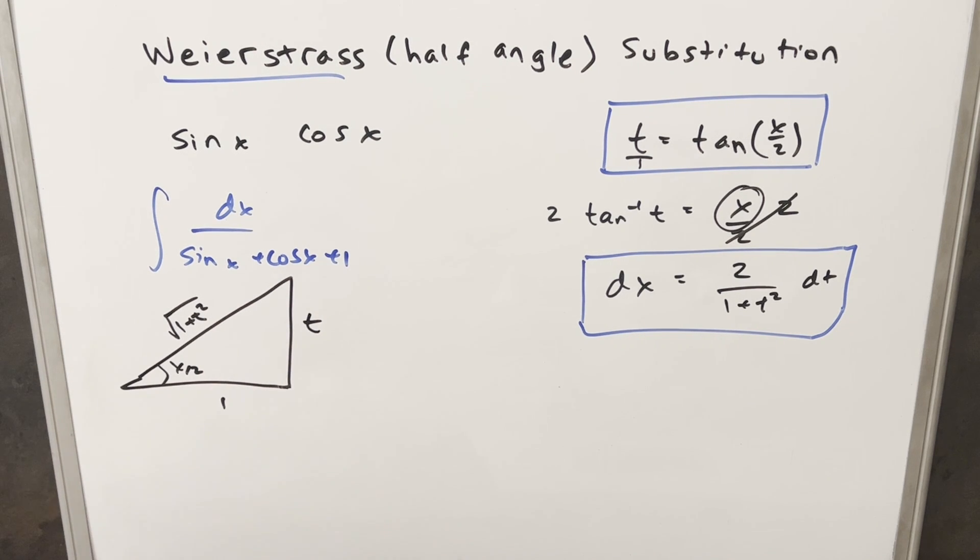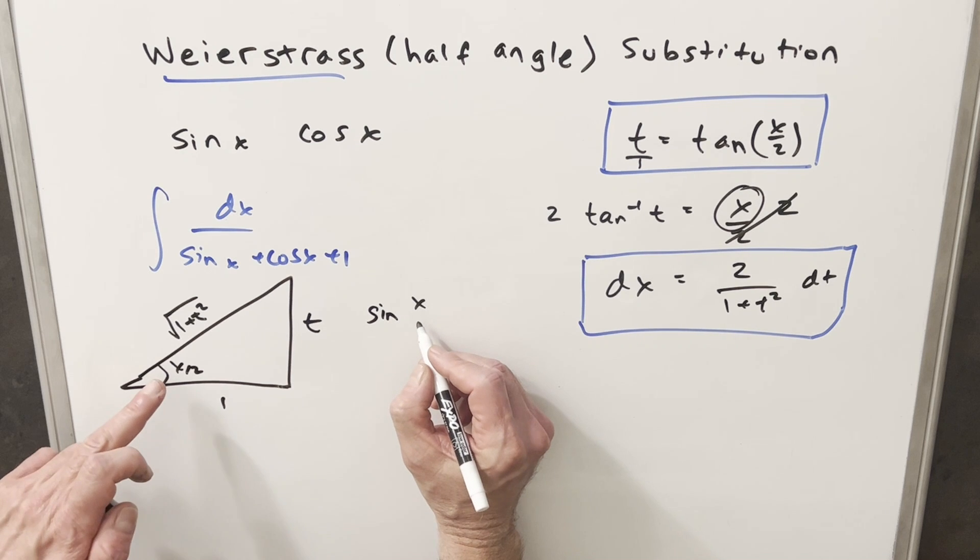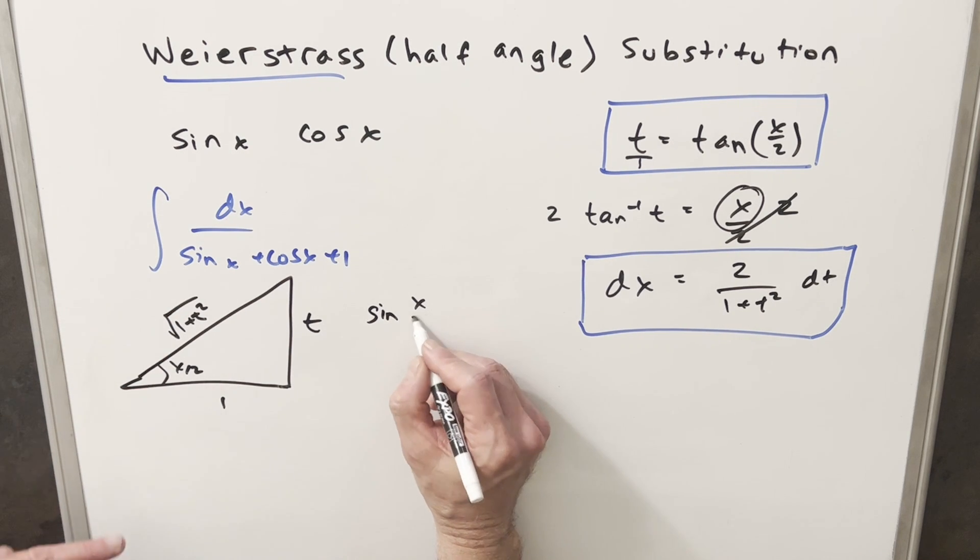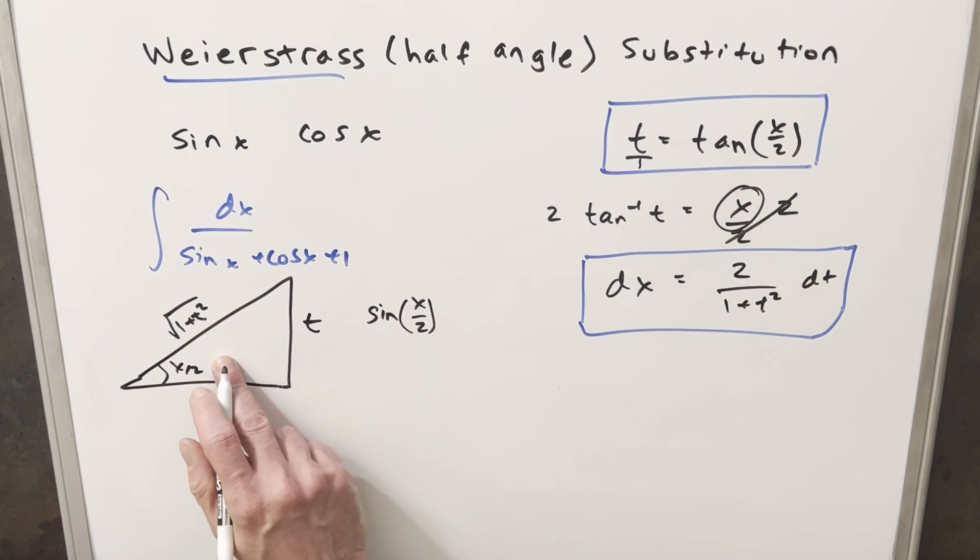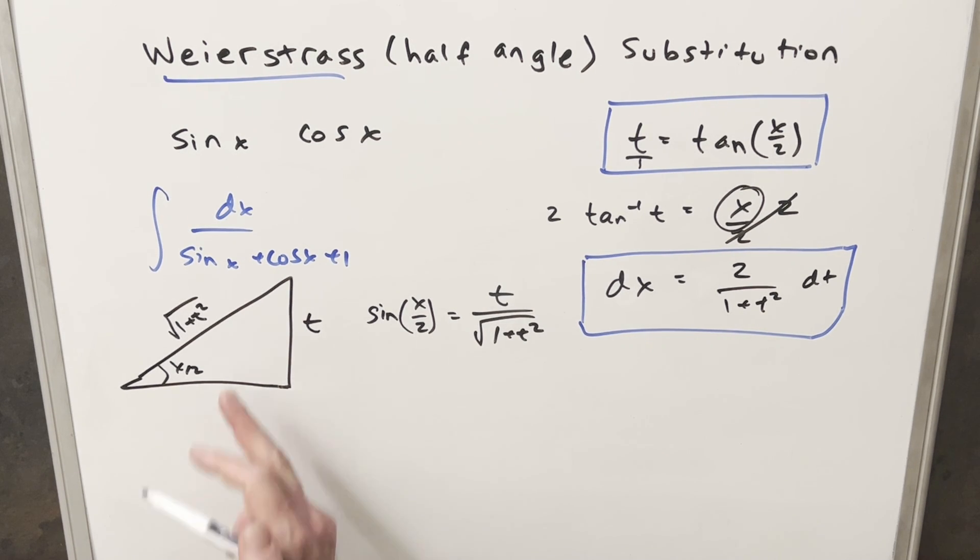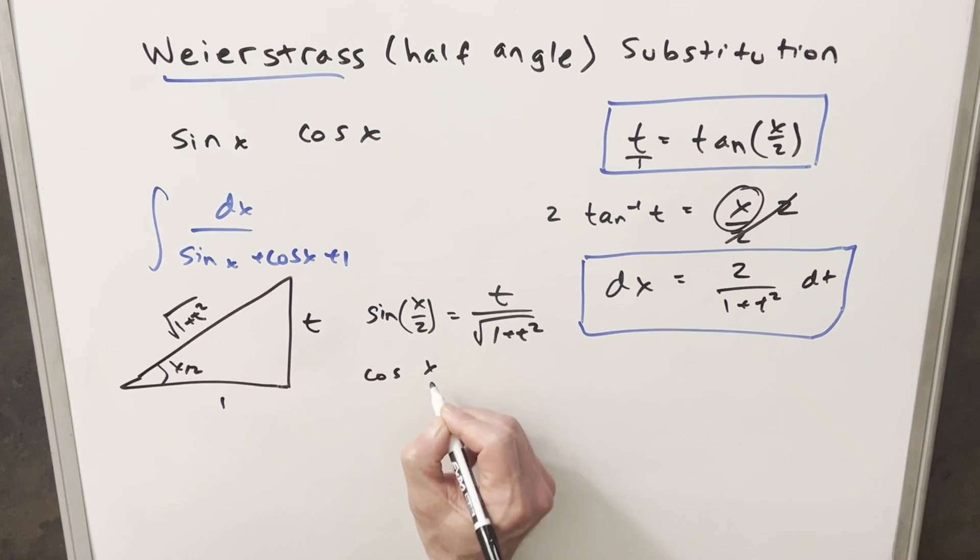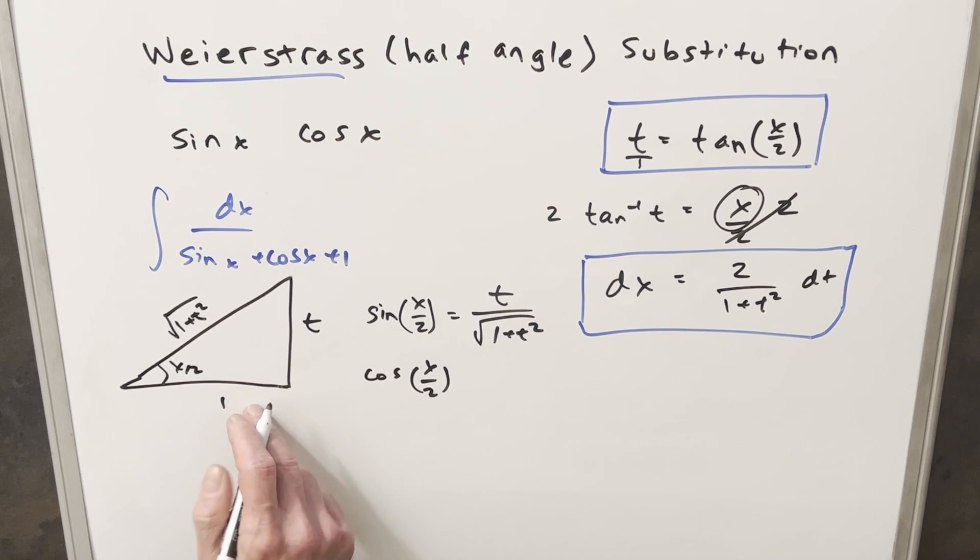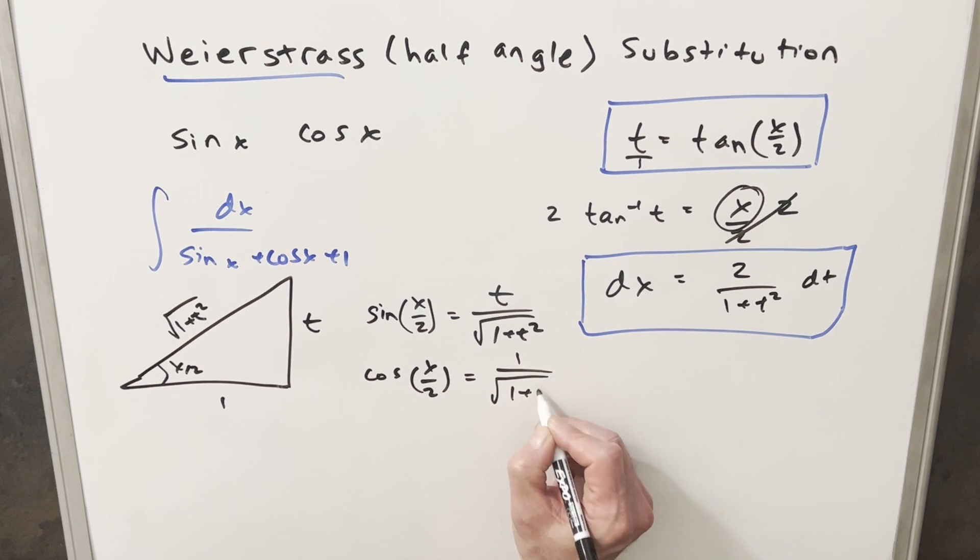But the nice thing about having our triangle now, we can find a few more values. We can find our sine value for x over 2, not for x, but just for this angle here. Sine of x over 2 is going to be opposite over hypotenuse. This is just going to be t over square root of 1 plus t squared. And then doing the same thing for cosine. Cosine x over 2 is going to be adjacent over hypotenuse. This is just going to be 1 over square root of 1 plus t squared.